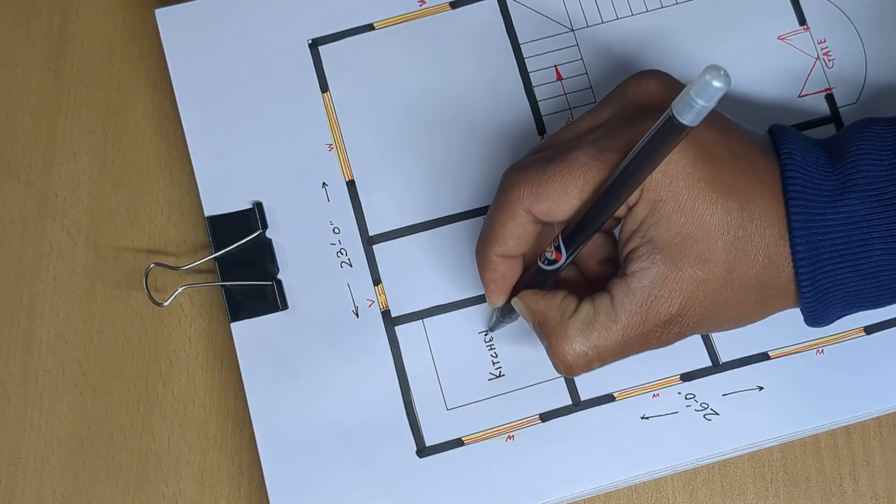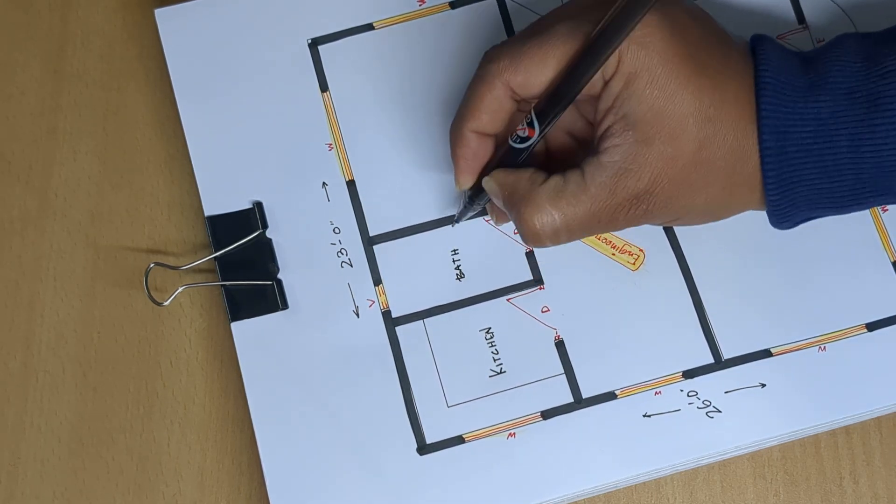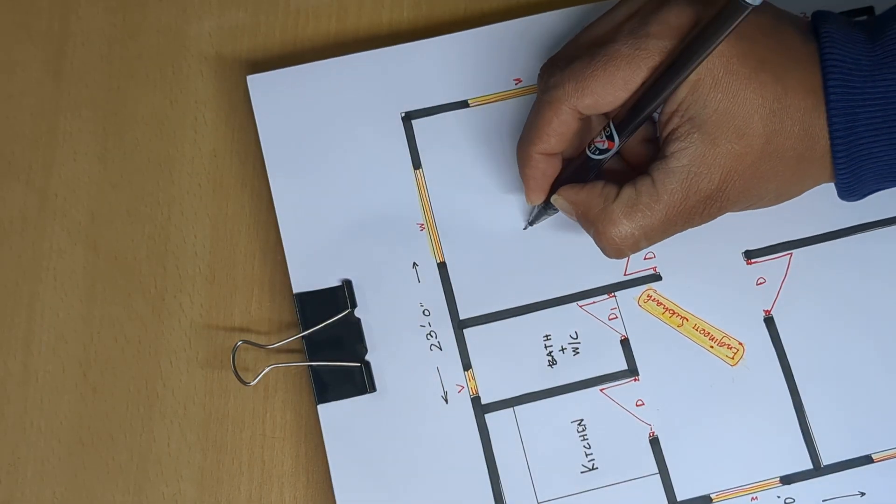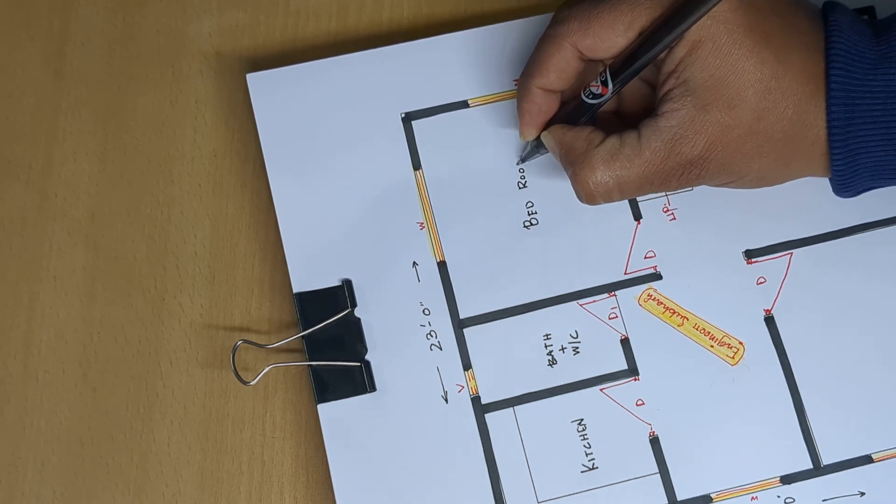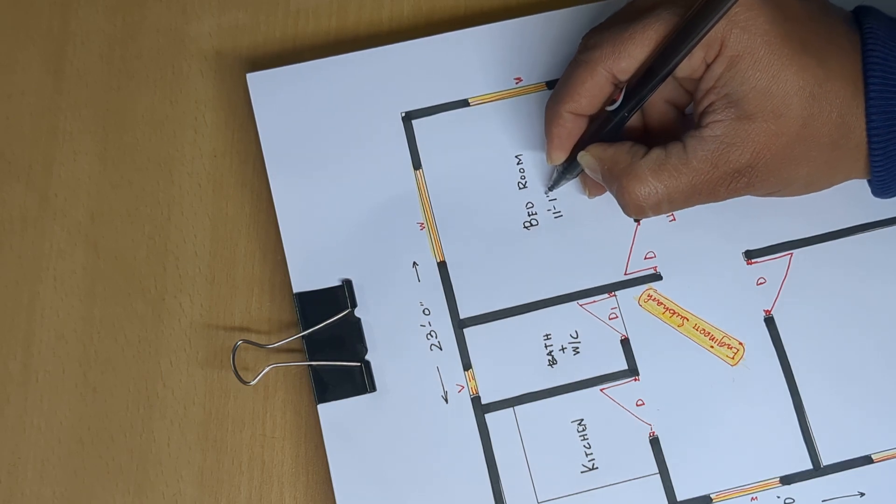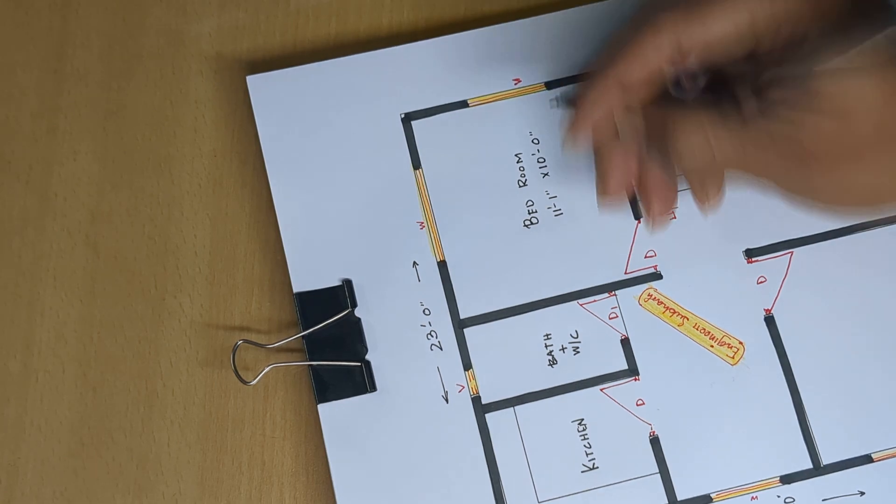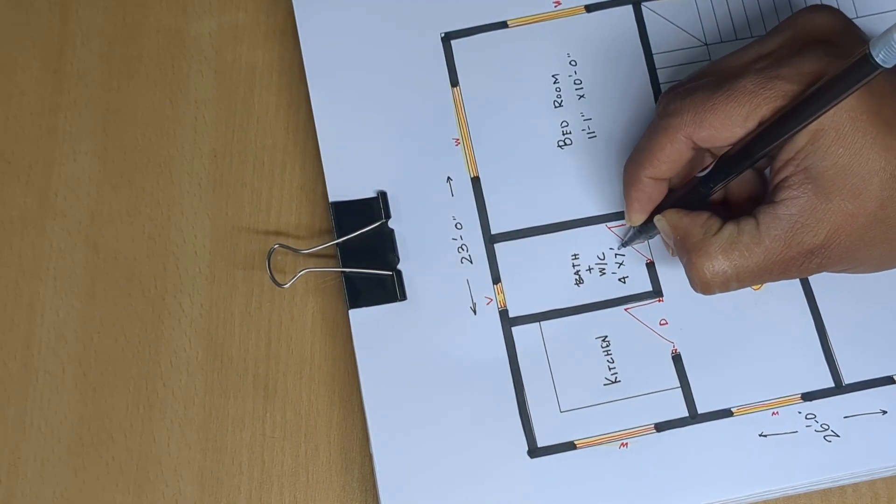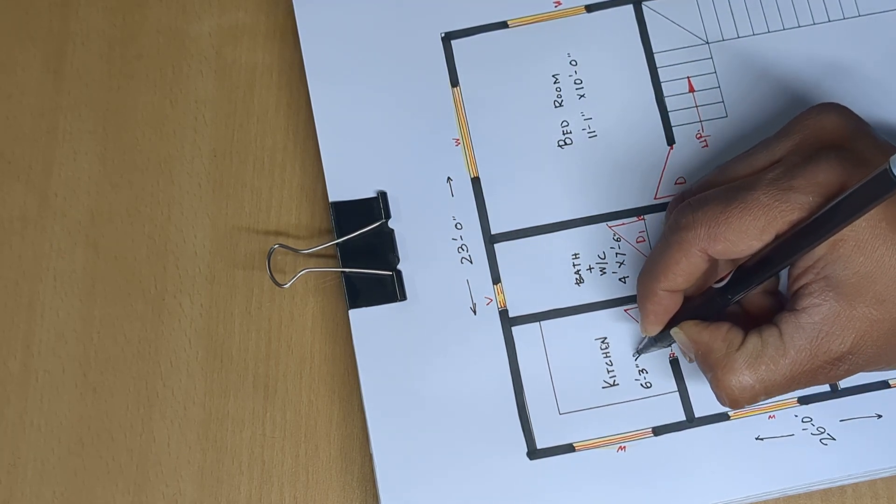Path plus WC bedroom. Eleven feet one inch and ten feet zero inch, four feet into seven feet six inch, six feet three inch into seven feet six inch.